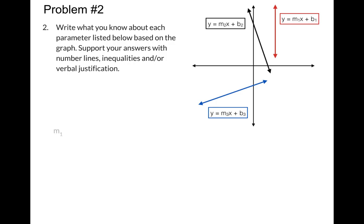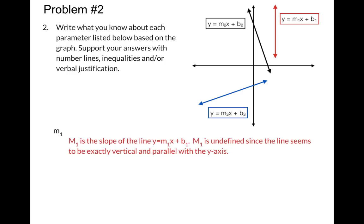Okay, so simply the first one m1 is in that red line. What do we know about m1? Well, we know it's the slope in the line y equals mx plus b, and we know it's undefined because it's going straight up and down. It's not a positive slope, it's not a negative slope, it's not a zero slope, it's what we call undefined because it happens to be parallel with the y-axis.